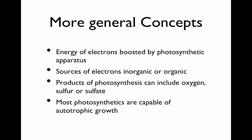The energy of electrons is boosted by the photosynthetic apparatus. It takes photons and uses that to boost the energy of the electron into a higher orbital, and then that electron goes through the electron transport chain.